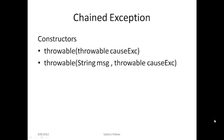Coming to chained exceptions, they provide two constructors. The first is a Throwable parameterized constructor where the parameter is a Throwable, which is the cause of the exception. The second is a Throwable parameterized constructor that takes a String message and a Throwable cause. In the first constructor, the cause exception is the exception that causes the current exception.